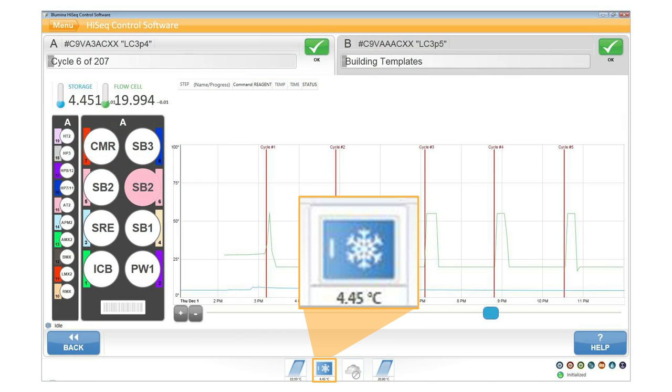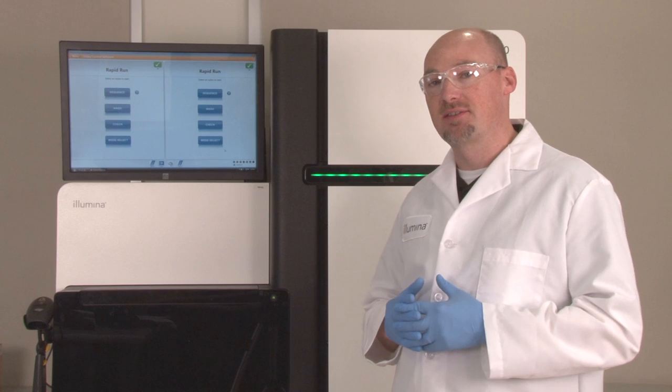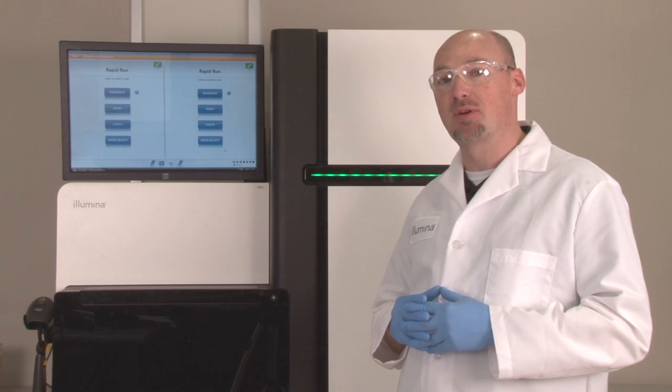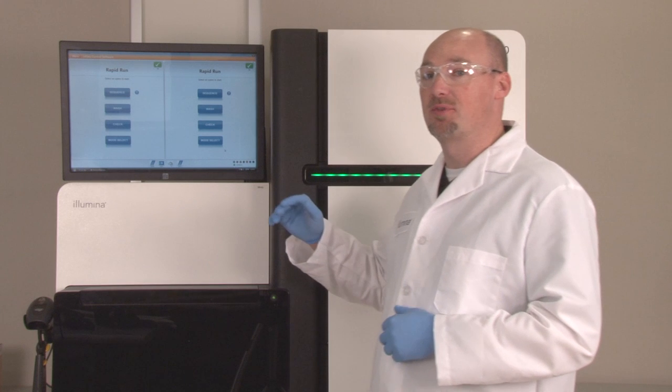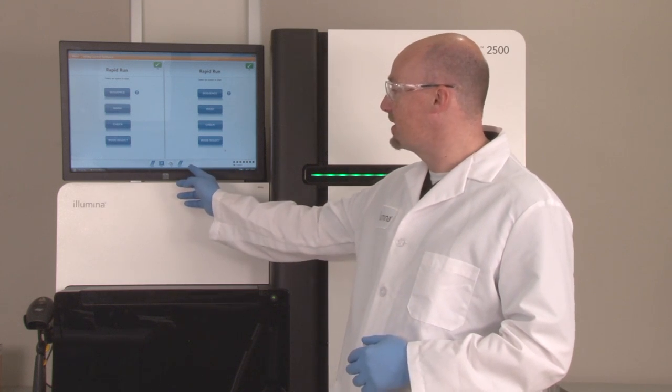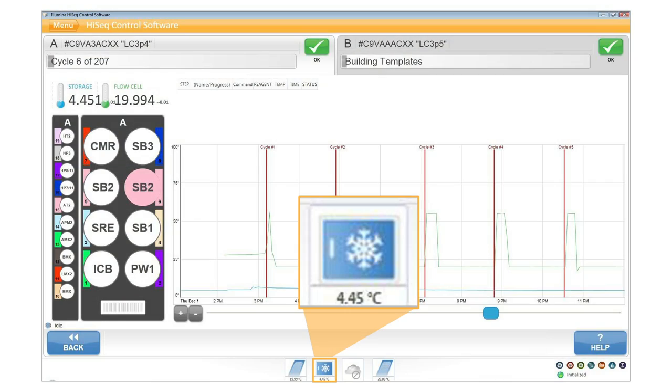While the instrument is running, make sure to monitor the chiller temperature. There is no high temperature warning message, so contact your Illumina support team if you see the chiller temperature rise above 7 degrees Celsius for an extended period of time.